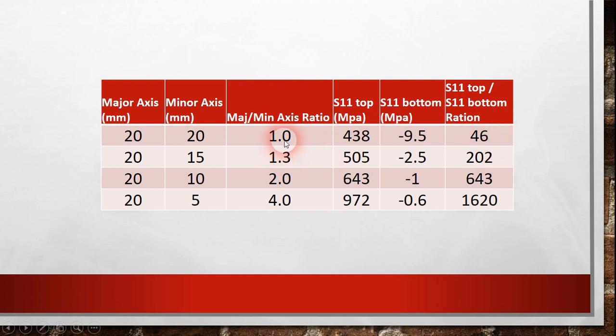And when we increase the major to minor axis ratio to 2, this ratio will be 643. And by increasing it to 4, finally, we will find that it will be 1620. It's a huge ratio.